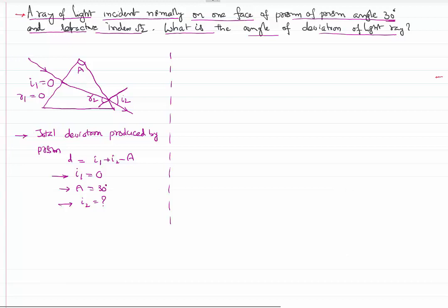It's given that angle of the prism is 30 degrees. A equals r1 plus r2. r1 is anyway zero, so r2 equals 30 degrees.